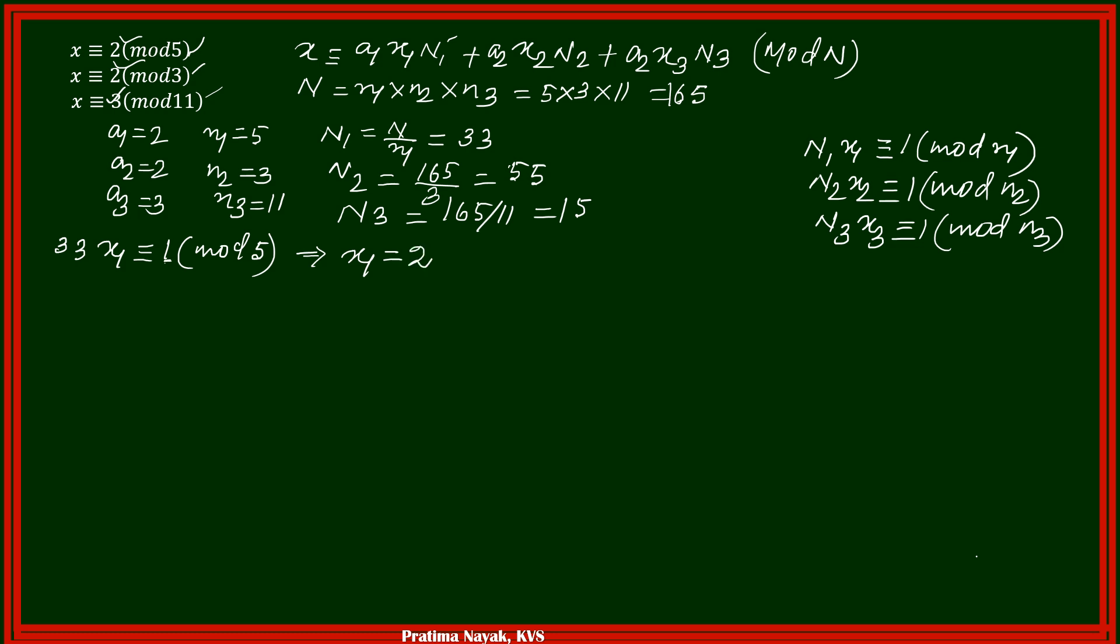Next is N2 x2, that means 55 x2 is congruent to again 1, modulo 3. 55 into 1, 55 when divides with 3, it leaves remainder 1. 18, 3 times 54, it leaves remainder 1. That means x2 equals to 1.